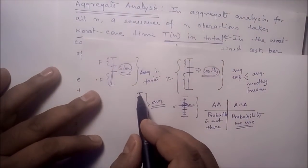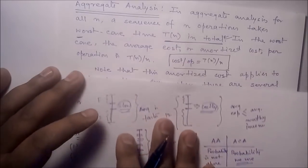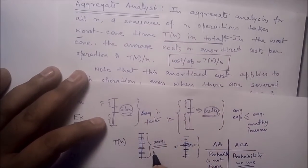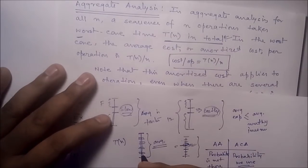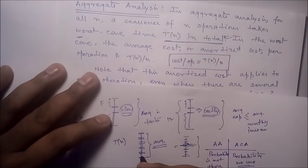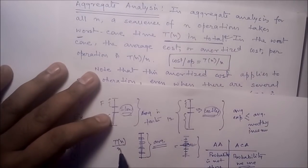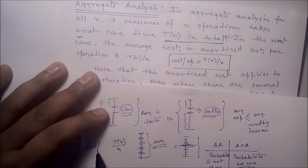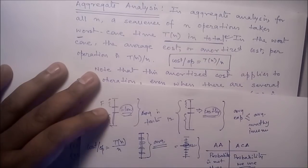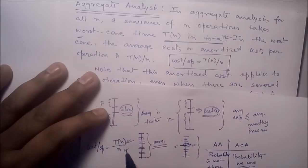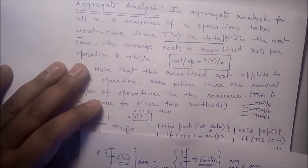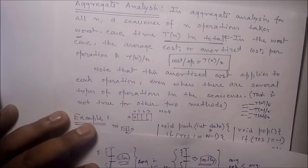The cost per operation equals T(n)/n, where T(n) is the total cost and n is the total number of operations. Note that this amortized cost applies to each operation, even when there are several types of operations in the sequence.